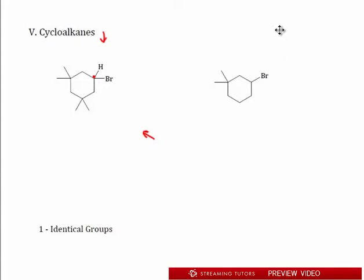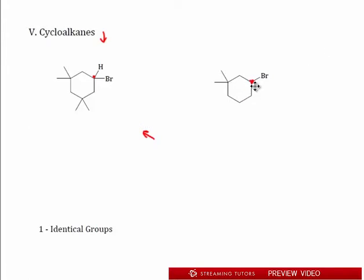So this side of the ring system is not different from the other side, and we're going to say that this system is achiral — there's no chirality here. Now look at the opposite example. In this case, we know this carbon could be chiral because it has four possible different groups. The carbons with two methyls are out, and the others have two H's. I take my finger and say: is this different than that? No, they're the same.